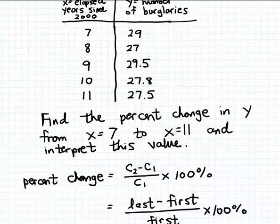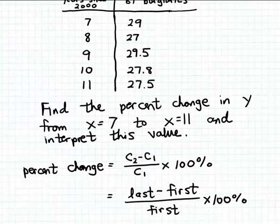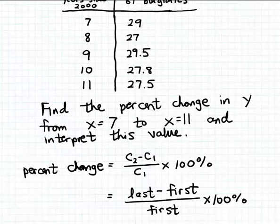Let's recall the formula for percent change. In symbolic terms, the percent change is C sub 2 minus C sub 1, divided by C sub 1, multiplied by 100%. It's usually easier to remember this formula in words: C sub 2 represents the last value, and C sub 1 represents the first value. So the percent change is last minus first, divided by first, times 100%.